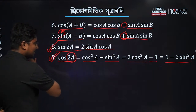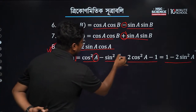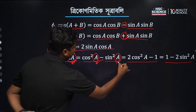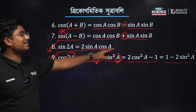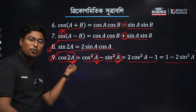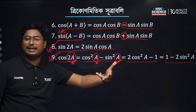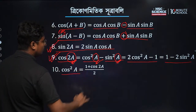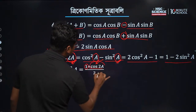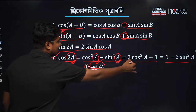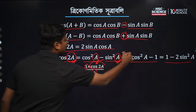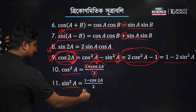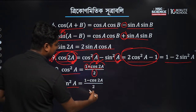Cos 2a also equals 2 cos squared a minus 1, and 1 minus 2 sin squared a. So cos squared a is equal to (1 plus cos 2a) divided by 2. And sin squared a is equal to (1 minus cos 2a) divided by 2.